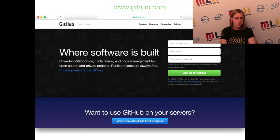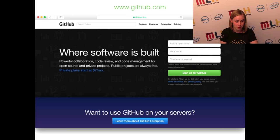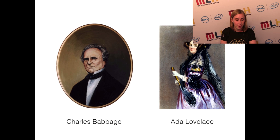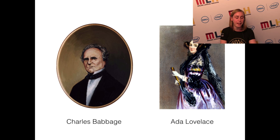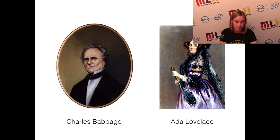Let's get started. This is the GitHub website, github.com. Let's also introduce the characters in our story today. We're going to be working with Charles Babbage and Ada Lovelace. Babbage has this great idea for his analytical engine, and he and Ada want to work together on it. Babbage is going to be creating the engine, and Ada is going to be writing a method for computing Bernoulli numbers.